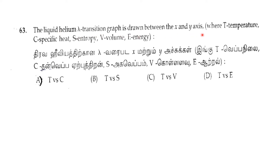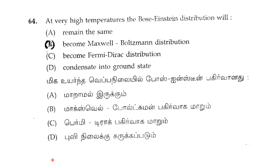Question 63: the liquid helium lambda transition graph is drawn between the x and y axis. The correct answer is noted for question 63. Next, question 64: at very high temperatures, the Bose-Einstein distribution will — the correct answer is noted.